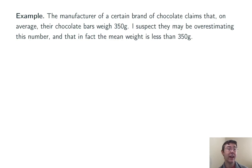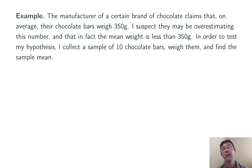Suppose that the manufacturer of a certain brand of chocolate claims that on average their chocolate bars weigh 350 grams. I suspect that they're overestimating this number and that in fact the mean weight of their chocolate bars is less than 350 grams. So I do the obvious thing. I go out and get a sample and weigh them and look at the sample mean. Let's say I get a sample of size 10. If I get a sample mean under 350 grams, I'm going to consider it to be evidence against the company's claim, and if I get a sample mean of 350 grams or more, it will not be evidence against their claim.